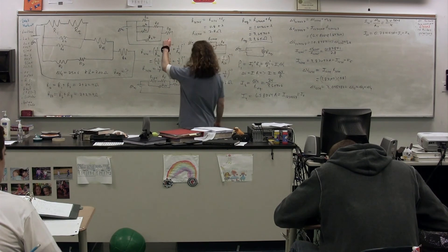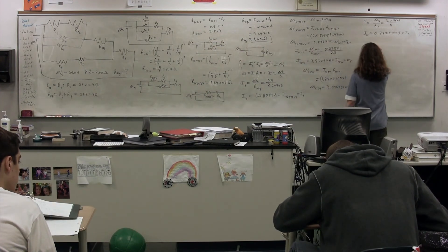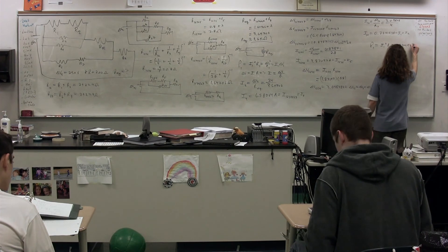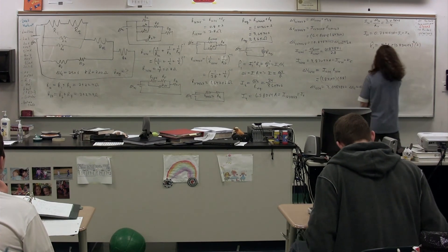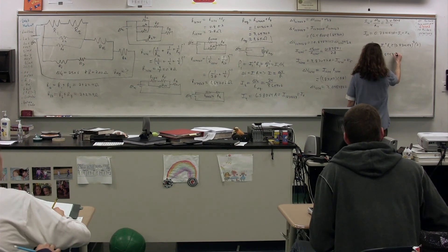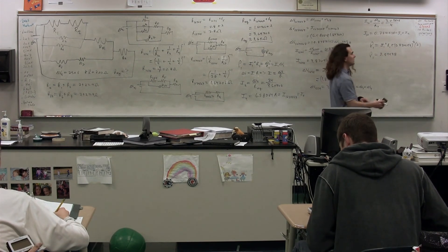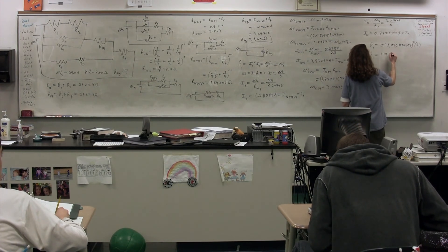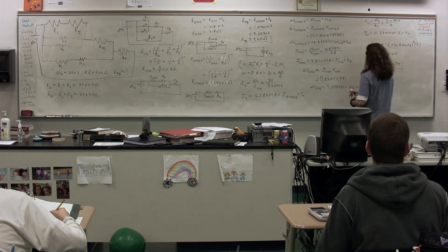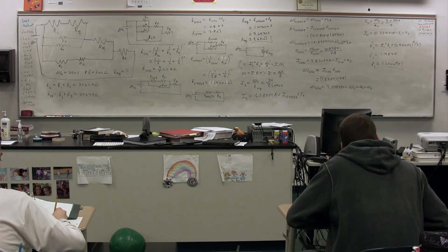We now have everything we need: the current through resistor one and the resistance of resistor one. Power in resistor one equals current one squared times resistance one: (0.774193)² × 2 = 1.19875 watts. With sig figs, the power dissipated by resistor one is 1.20 watts — resistor one converts 1.2 joules of electrical potential energy into internal energy every second.